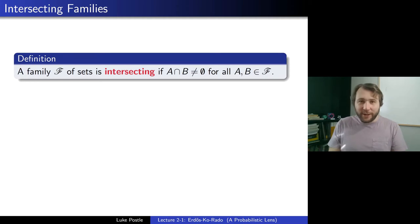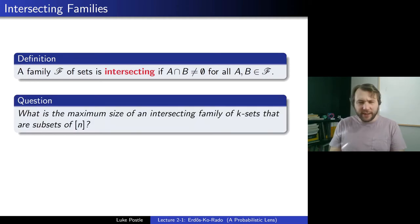Here is a natural question about intersecting families, a well-studied object in combinatorics. It is, what is the maximum size of an intersecting family of k-sets that are subsets of n? So if we had sets all of the same size, here k, and we know they're inside a larger set, so they're subsets of 1 up to n, what's the maximum size of an intersecting family? We can't just choose all of the sets as they may not all intersect. So what is this answer?